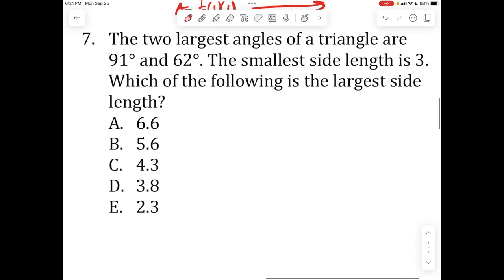The two largest angles of a triangle are 91 and 62 degrees. The smallest side length is three. Which of the following is the largest side length? So first of all, whenever you're given a problem where you're given two angle measures for a triangle, you should almost immediately just calculate the last angle measure. So we're given one that's 91 degrees, we're given 62 degrees. And then you can just calculate the last one just by doing 180 minus 91 minus 62. That gives you 27. So it's almost a 30, 60, 90 triangle, but not quite. So the smallest side length is three. Obviously, that has to be opposite the smallest angle, so it makes sense.